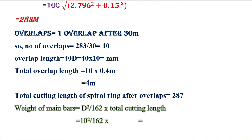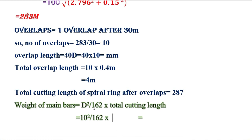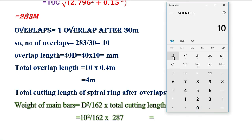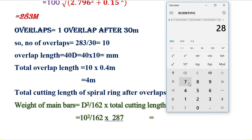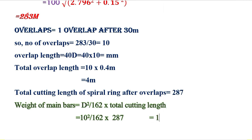Now we calculate the weight of the spiral bars using d²/162 × total cutting length. Diameter d = 10 mm, total cutting length = 287 meter. So: 10² ÷ 162 × 287 ≈ 177 kg. That is the weight required for the spiral rings. Thanks for watching this lecture, please stay tuned for the next.